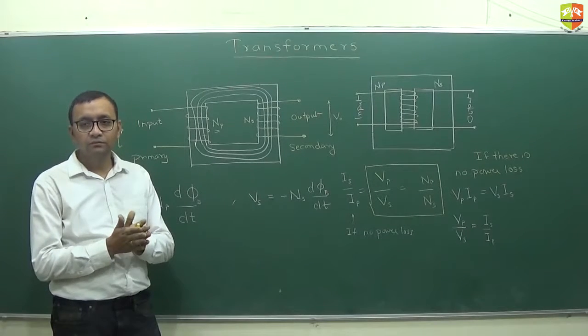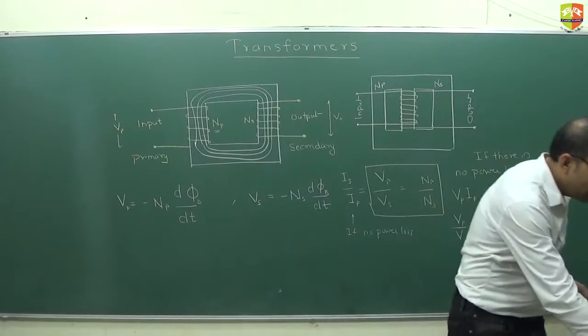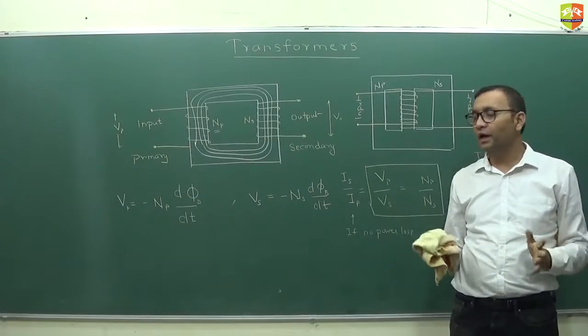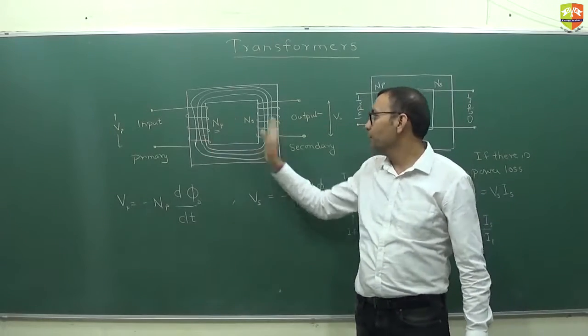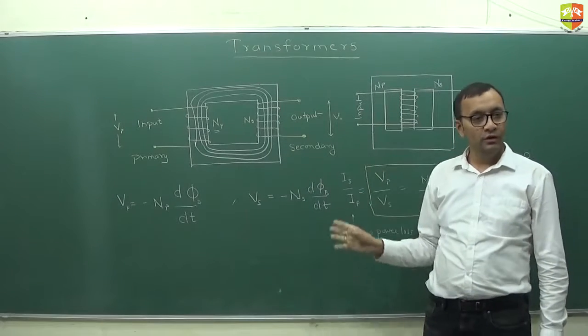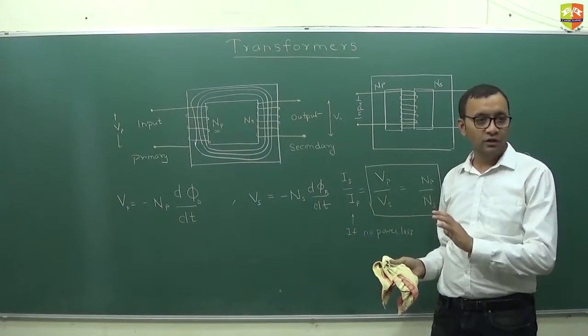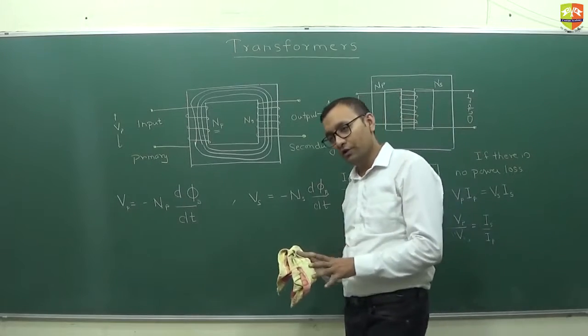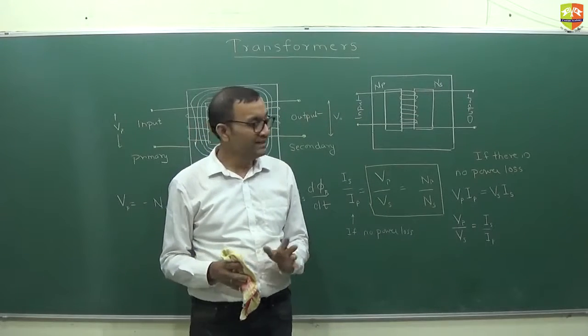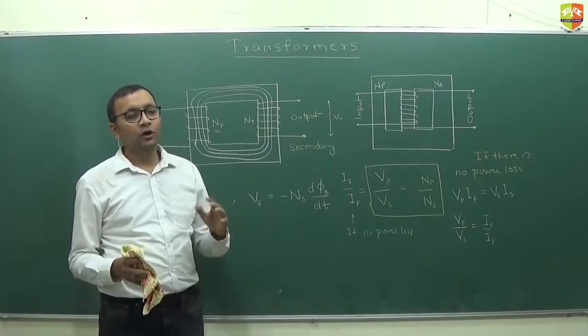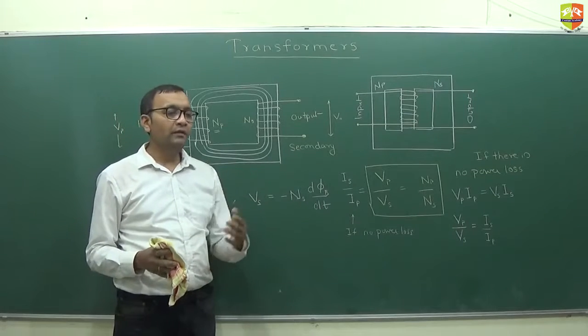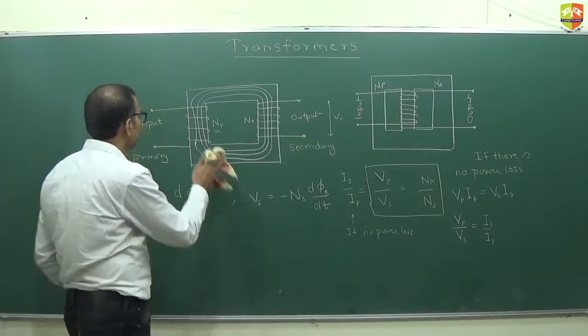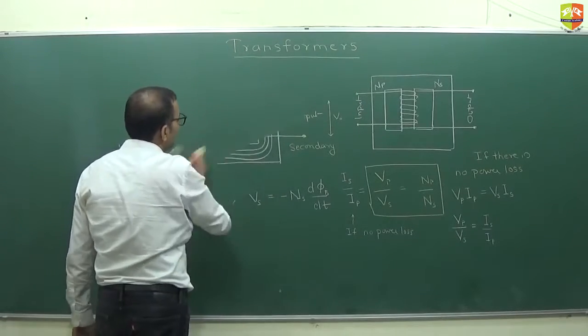So this is how a transformer works. But we have discussed only an idealistic scenario, a very ideal scenario. All the power is getting converted from input to output side. But this is not how it works. There will be several losses in the transformer. So let's see what all those losses are, where they come from, and what we do to overcome or minimize those losses. Write down losses in the transformer.